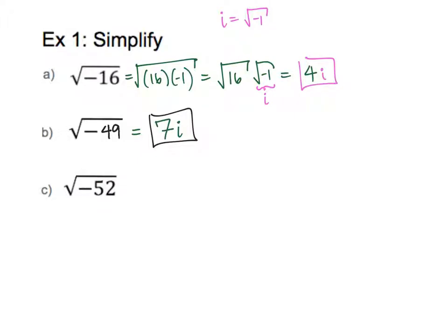This one is a little bit tricky. I know there's a negative so I'll need an i, but I need to take the square root of 52, and 52 is not a perfect square. So I'll build a factor tree: 52 is 13 times 4. 13 is prime so it can't be broken up, but 4 is 2 times 2 — that's a pair, so 2 comes out. 13 is a leftover prime so it goes back in, and I need an i because this is the square root of a negative number. So the answer is 2i√13.